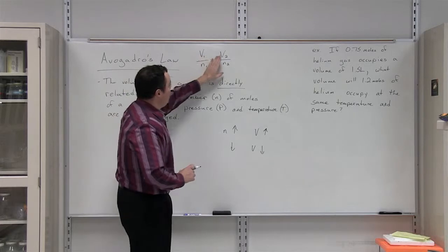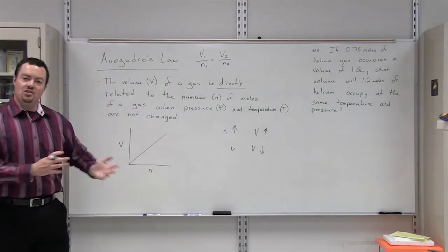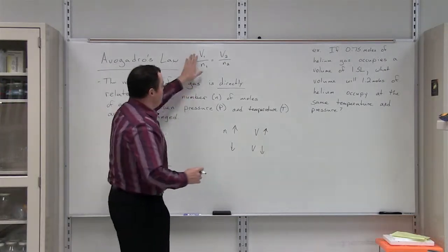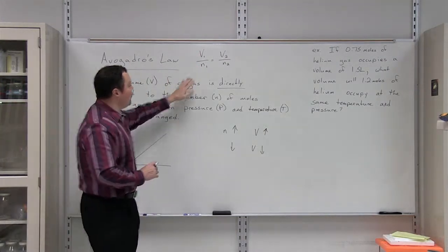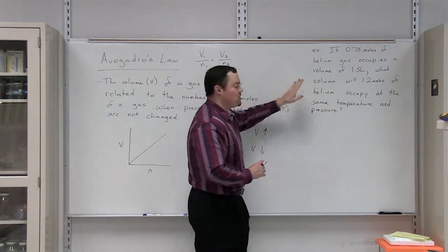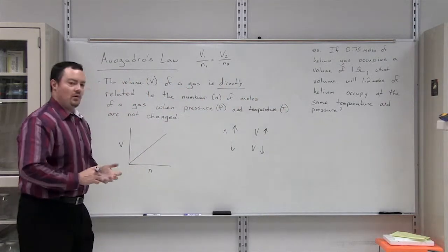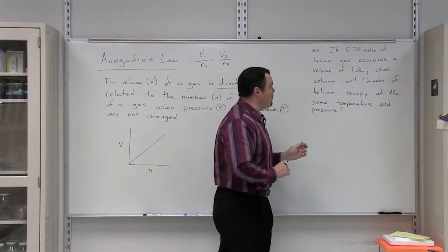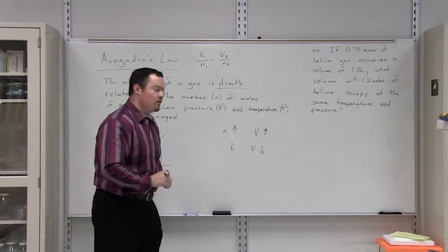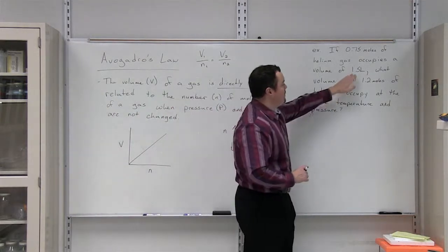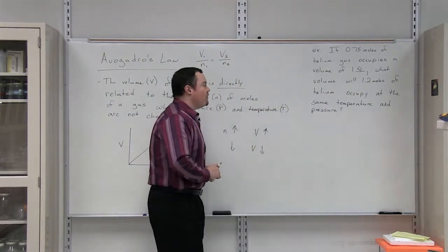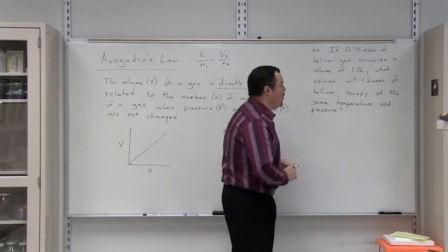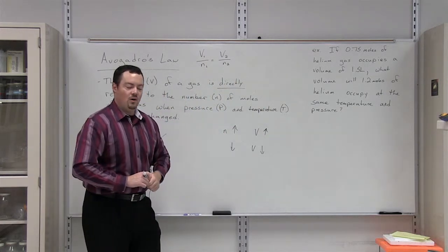The 1 and 2 subscripts indicate a gas under condition number 1 and condition number 2. Let's use Avogadro's Law, this formula here, to solve this problem. We have a sample of helium gas, and we know that we have 0.75 moles of this gas, and it occupies a volume of 1.5 liters. What will the volume be if we increase the number of moles to 1.2 moles?